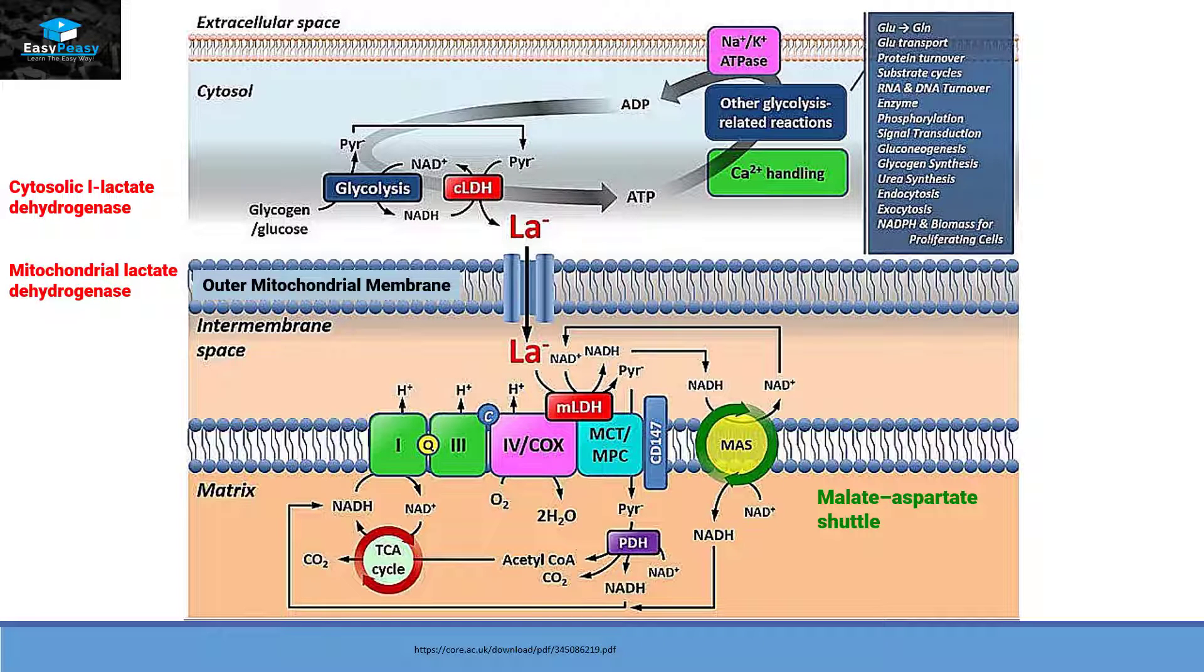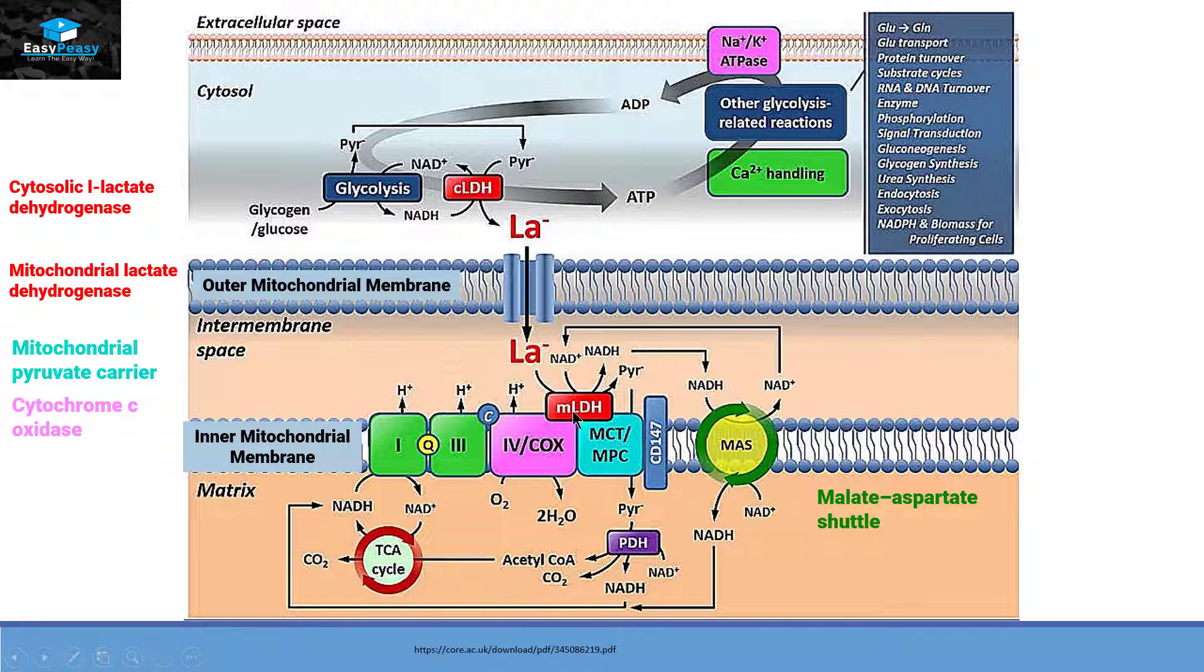Over here with the help of an enzyme called mitochondrial lactate dehydrogenase, which is attached to two integral proteins called mitochondrial pyruvate carrier and cytochrome c oxidase present on the inner mitochondrial membrane, lactate converts itself back into pyruvate. With the help of this integral protein, pyruvate enters the matrix of mitochondria. Inside the matrix it takes help from pyruvate dehydrogenase and converts itself into acetyl-CoA, which then enters the TCA cycle and releases energy by aerobic respiration.